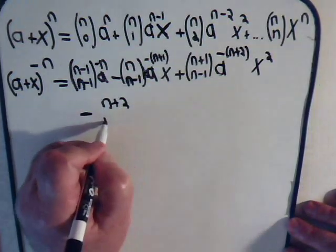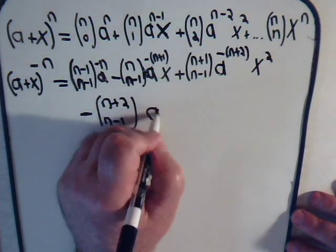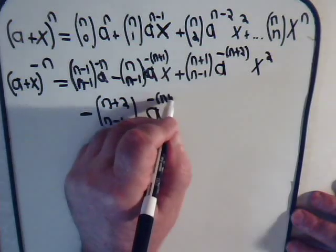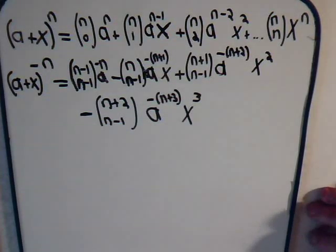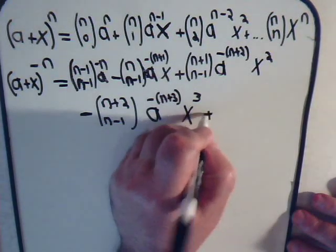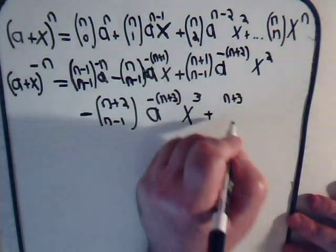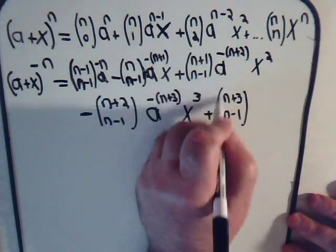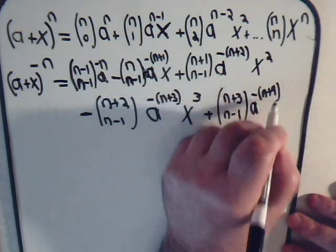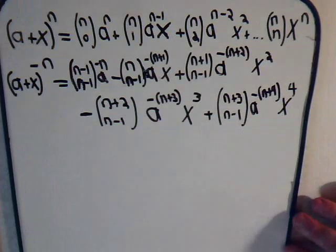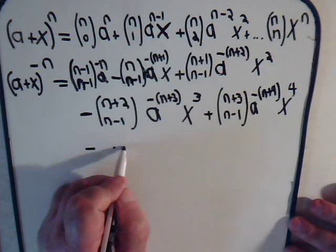the next term in this infinite series would be minus (n + 2) over (n - 1), this stays the same. And now we have a to the minus (n + 3) times x cubed. The next term would be (n + 3) over (n - 1), this stays the same, a to the minus (n + 4) times x to the 4th, and the next term is a negative term, and that pattern just keeps on repeating.